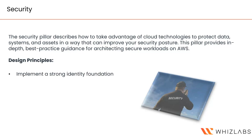The first security design principle is to create a strong identity foundation, defining who and what can access resources. You should implement the principle of least privilege and separation of duties with appropriate authorization for each interaction with your AWS resources. For example, your backup team should be able to view resources and take backups, but should not have permissions to delete any resources.